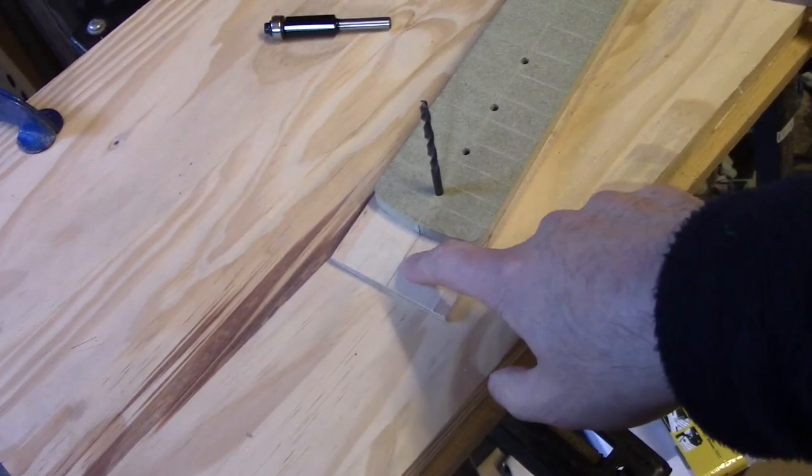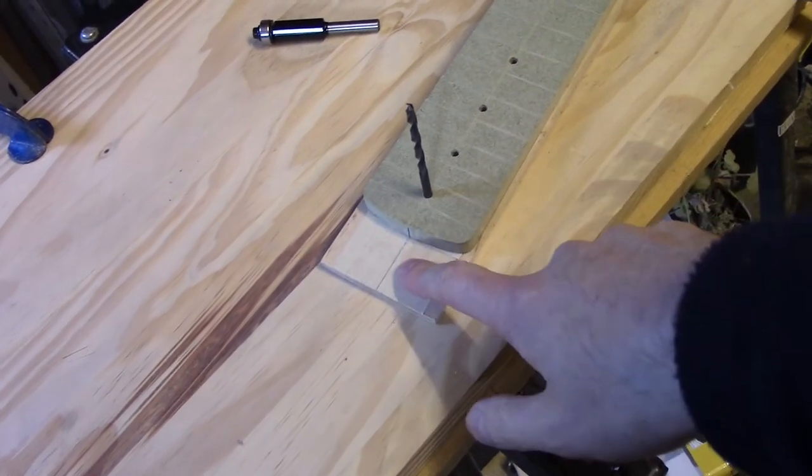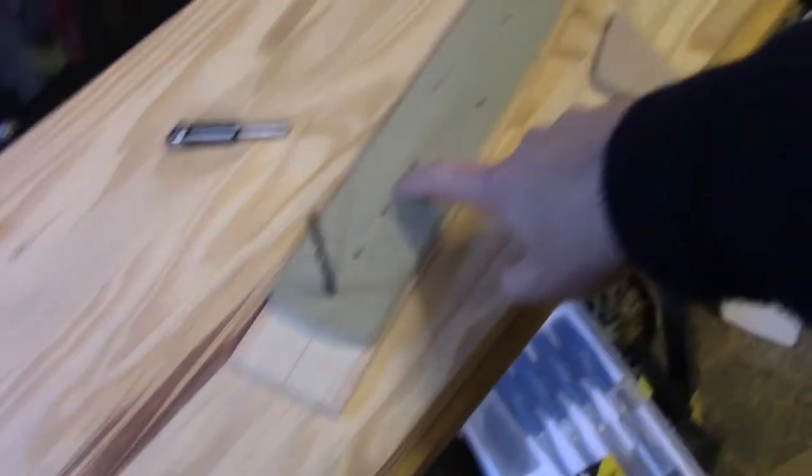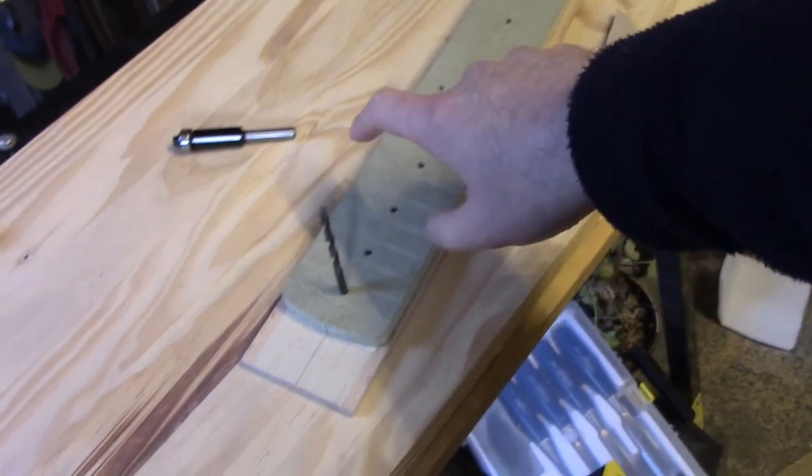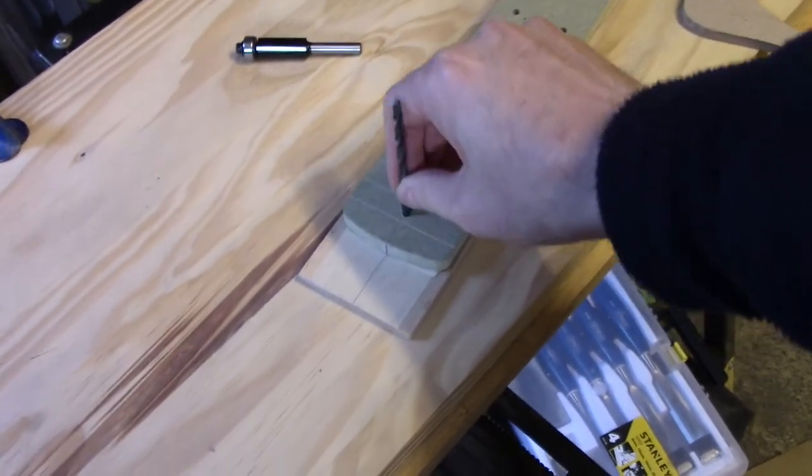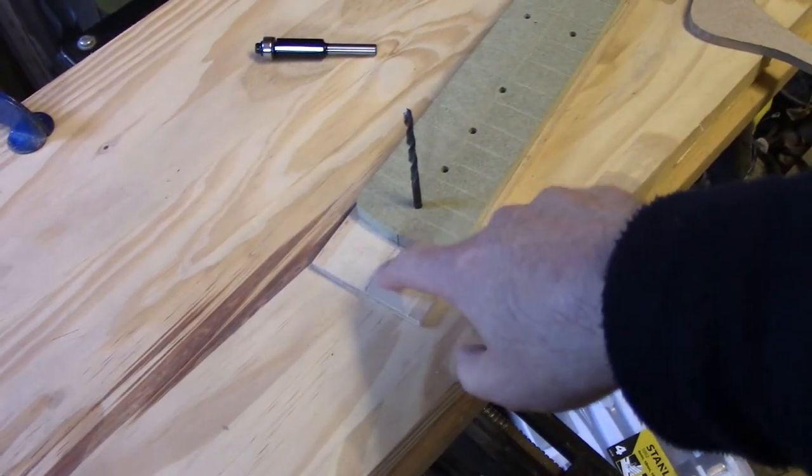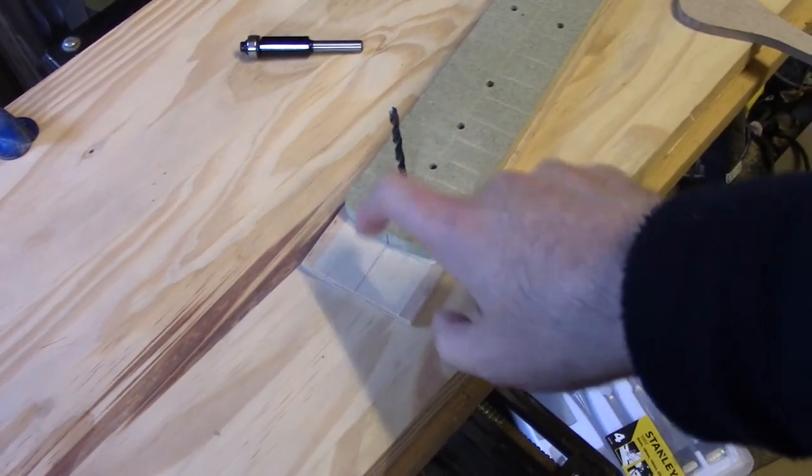So I drew a center line on the back of the fretboard on masking tape, and then I lined that up with the center line on the template and clamped them together, and then I drilled a small hole, just a couple of millimeters into the fretboard.